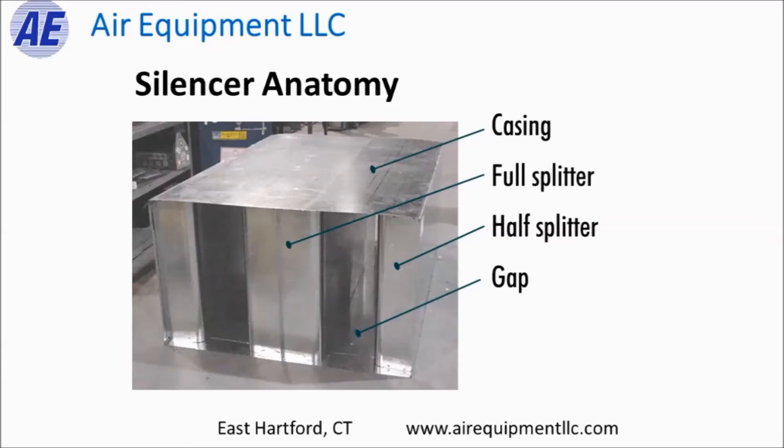The sound trap is constructed out of the same material as the adjacent ductwork, usually galvanized steel, and the casing is most often the same dimension as the ductwork it's connected to. But inside it's much different than just a piece of ductwork. There are what we call splitters — modules shaped from perforated metal that have a sound absorbing media inside, usually fiberglass — and there are gaps which allow the air to flow through.